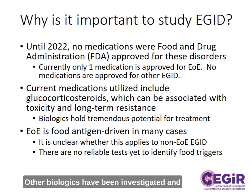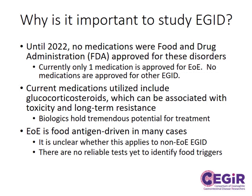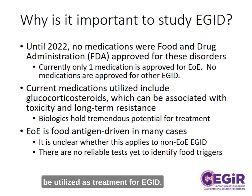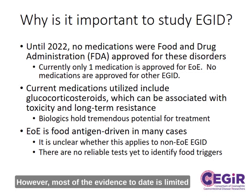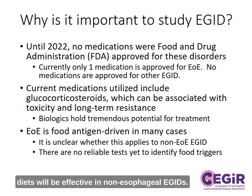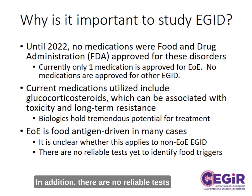Other biologics have been investigated and hold tremendous promise as future therapies. However, only one biologic, dupilumab, is currently used clinically. Food elimination diets can also be utilized as treatment for EGID. However, most of the evidence to date is limited to eosinophilic esophagitis, and it is unclear whether these diets will be effective in non-esophageal EGID. In addition, there are no reliable tests yet to identify culprit food triggers.